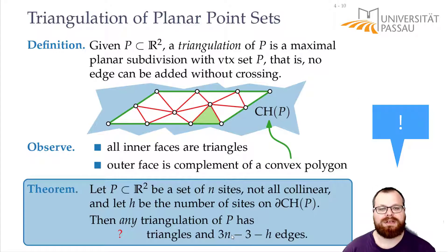That means we have in total 3n minus 3 minus h edges here. And now if we plug this again into Euler's polyhedra formula then we also get that we have exactly 2n minus 2 minus h triangles in this triangulation.